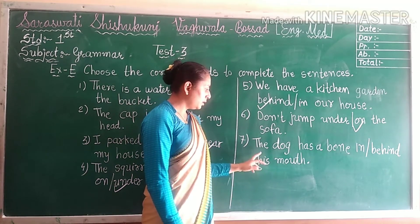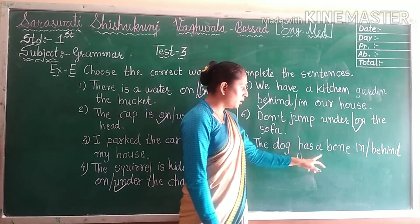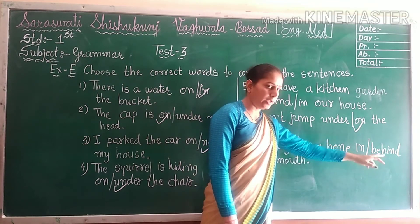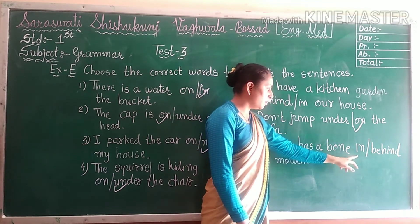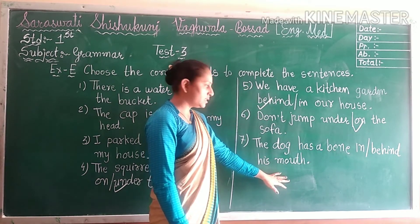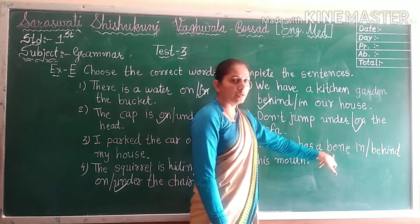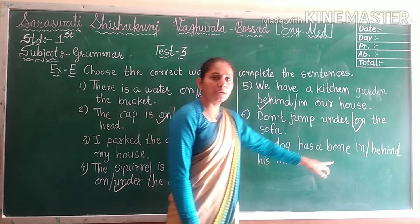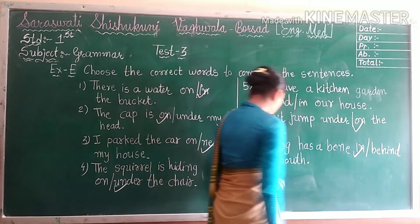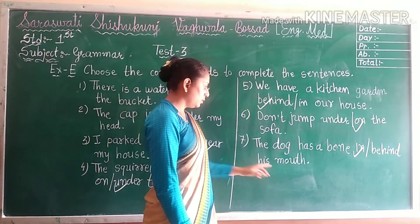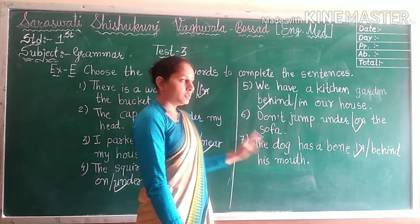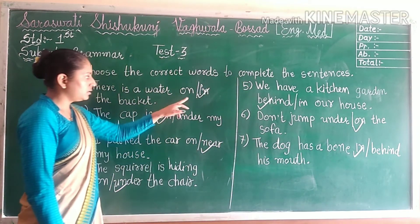And the last number. The dog has a ball — blank — his mouth. Options: IN or BEHIND. Where can we see the ball of the dog? In or behind? IN. So our answer is: the dog has a ball in his mouth.